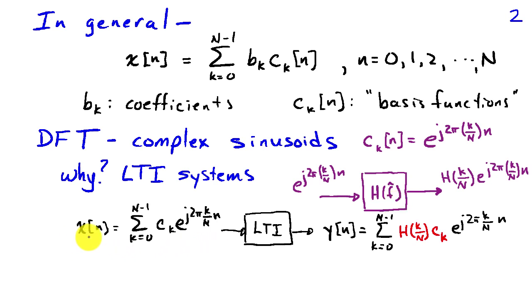So if we expand an arbitrary signal x of n as a weighted sum of complex sinusoids, and we put that into a linear time invariant system, then the output takes a particularly simple form. It takes the same form as the input, except the coefficients have been modified by the corresponding values of the frequency response.